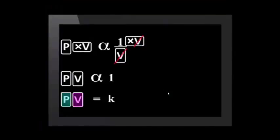What it does mean is that for a particular amount of gas at a constant temperature, the gas's pressure, multiplied by its associated volume, will always equal the same constant, which we can call K.